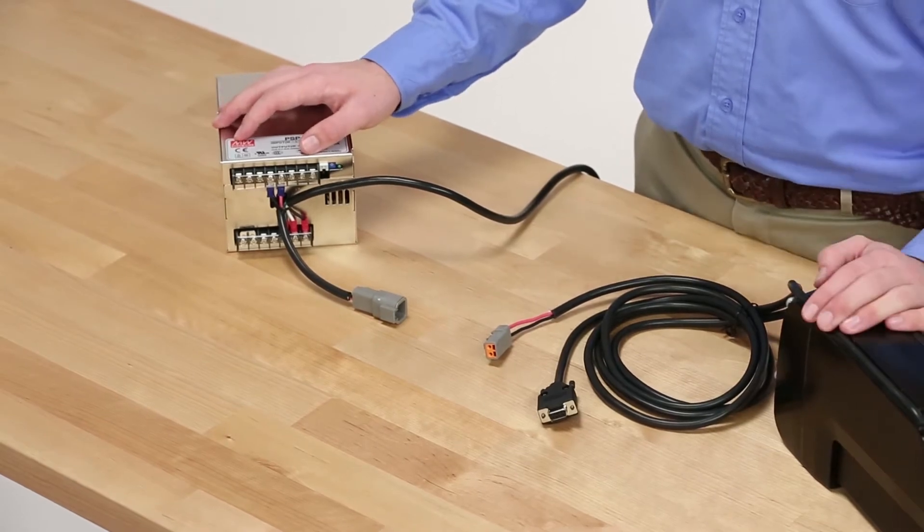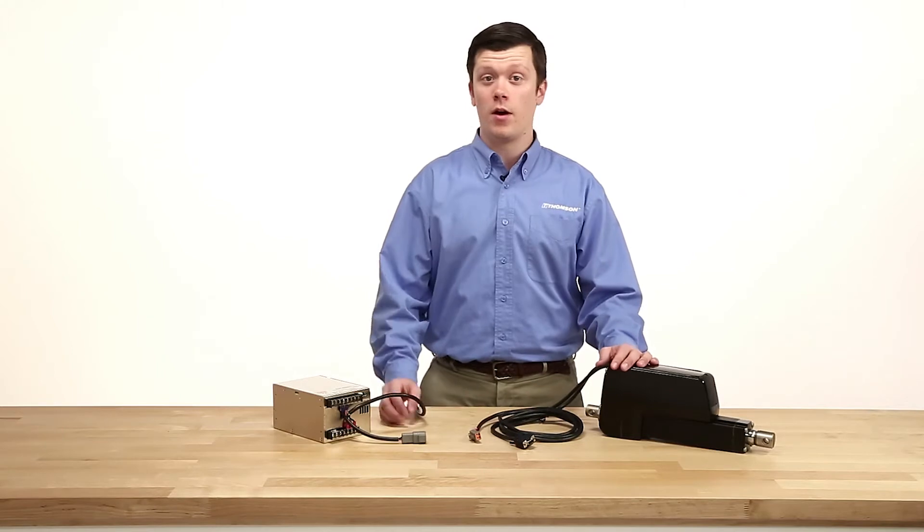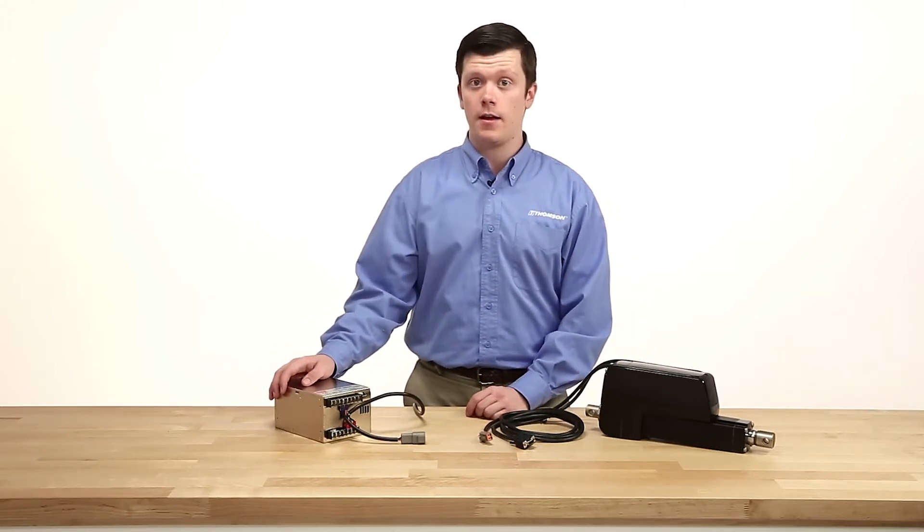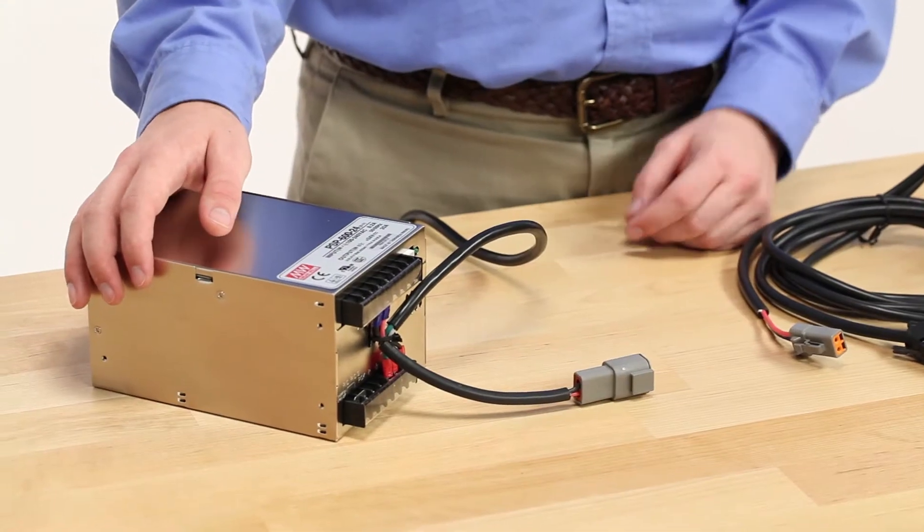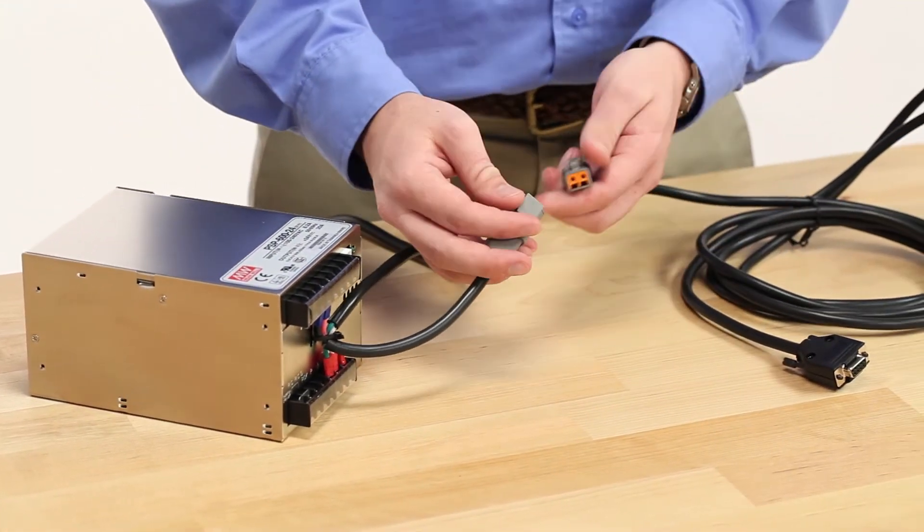Most of our DC actuators can be run from a simple DC power source like a battery, but with AC input power supplies that provide a DC output, it is important to measure the rated current draw of the actuator to ensure that the power supply will be sufficient for the loads encountered.